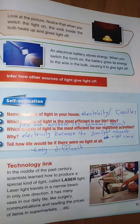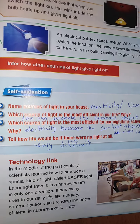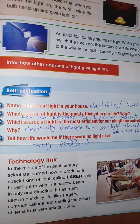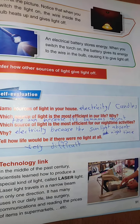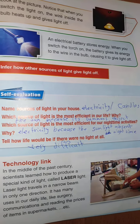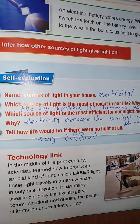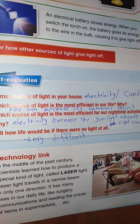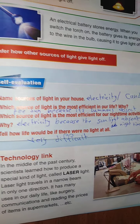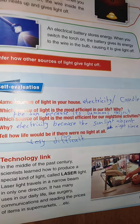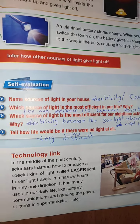Self-evaluation. Name sources of light in your house — for example, electricity and candles. Which source of light is the most efficient in our life, and why? The Sun, because it is a luminous object.